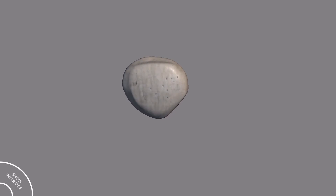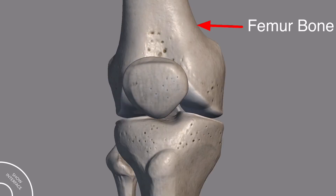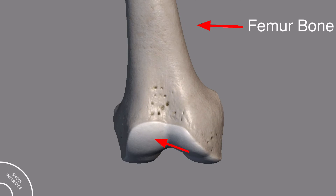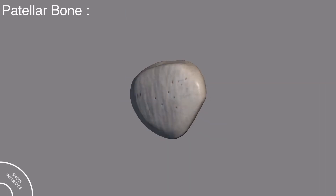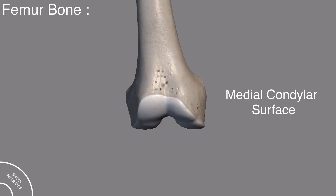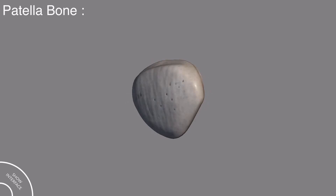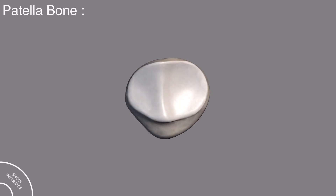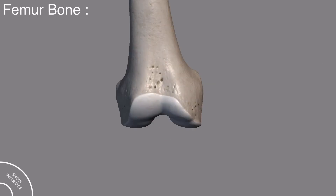If you remember the femur bone — on the femur bone, this is the patella surface, and the posterior smooth articular surface articulates with this surface of the femur bone. The posterior medial articular surface articulates with the medial condyle of the femur bone, while the posterior lateral articular surface articulates with the lateral condyle of the femur bone.